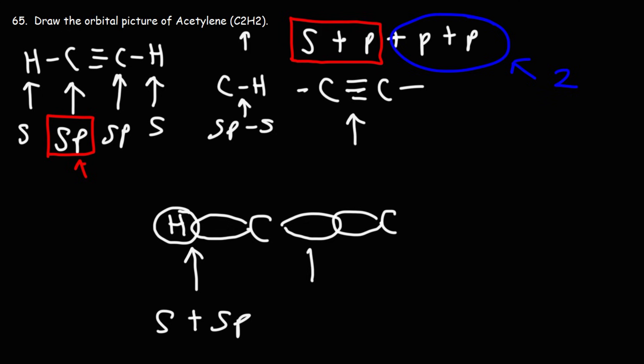This orbital is an sp orbital and this one is an sp orbital. Both of these carbon atoms are sp hybridized. So we have an overlap of two sp orbitals. We would say it's sp-sp, that's the orbital overlap.